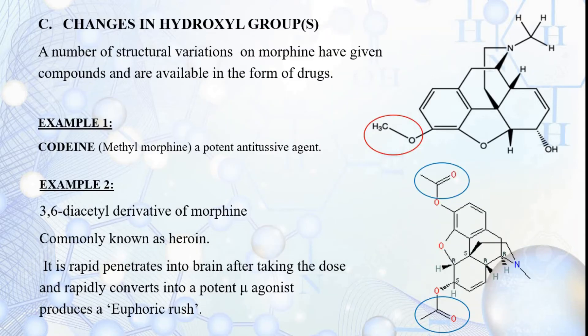Changes in the hydroxyl groups give codeine and heroin. In codeine, the OH group at position 3 is replaced by a methoxyl group, giving about 1/12th the analgesic potency of morphine. It is useful as a cough suppressant with less potential for abuse, prepared by methylation of the phenolic OH group. Heroin is obtained by acetylation of morphine using acetic anhydride; both hydroxyl groups at positions 3 and 6 are acetylated, converting morphine to diacetyl morphine, which increases hallucination.